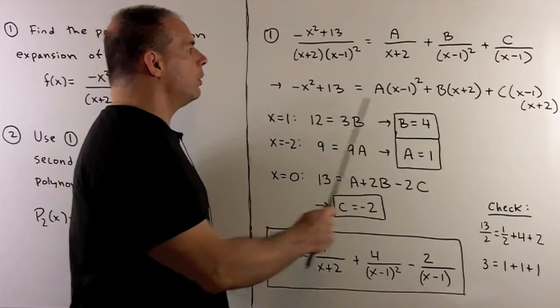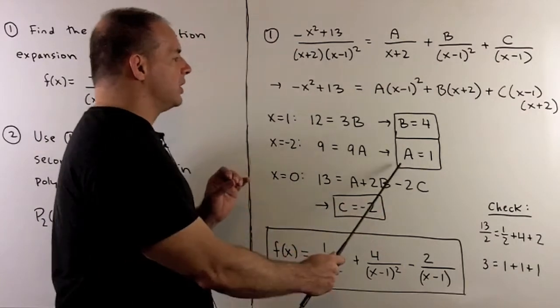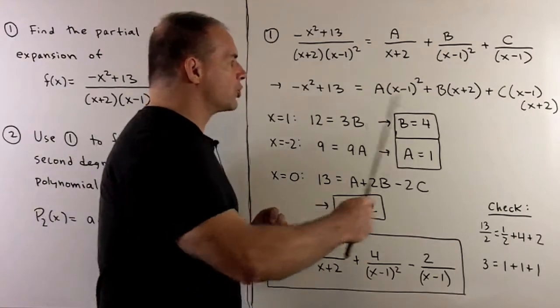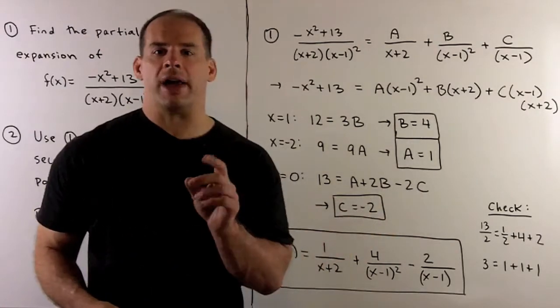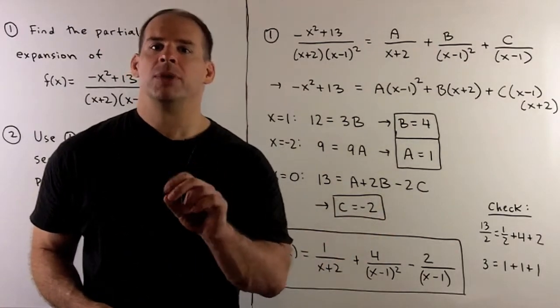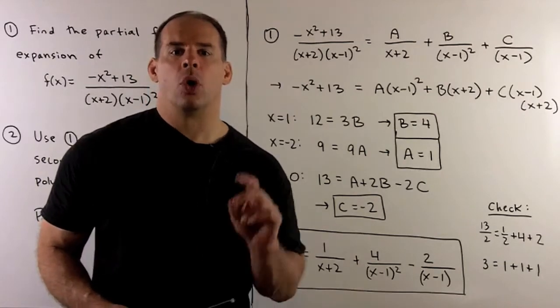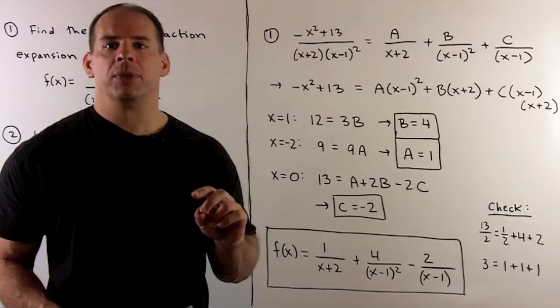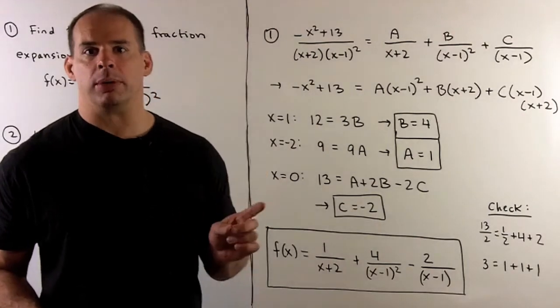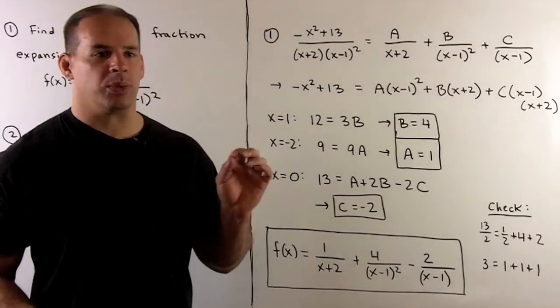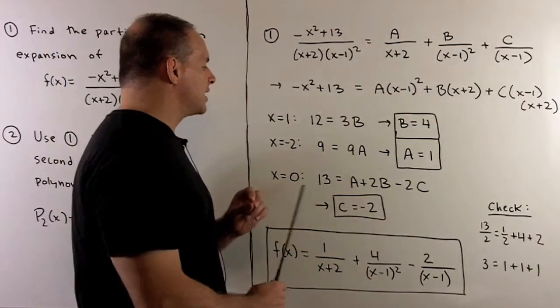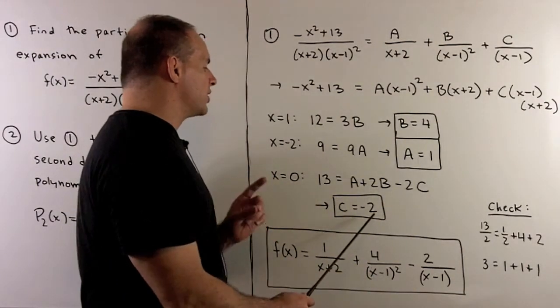If I let x be equal to -2, we get A is equal to 1. We've run out of factors to target. So I can either take the derivative, target 1 again, or we can just choose any point. Since we already have A and B, we should get C without a problem. Just let x be equal to 0 and see what comes out. When we solve, I'll get C is equal to -2.